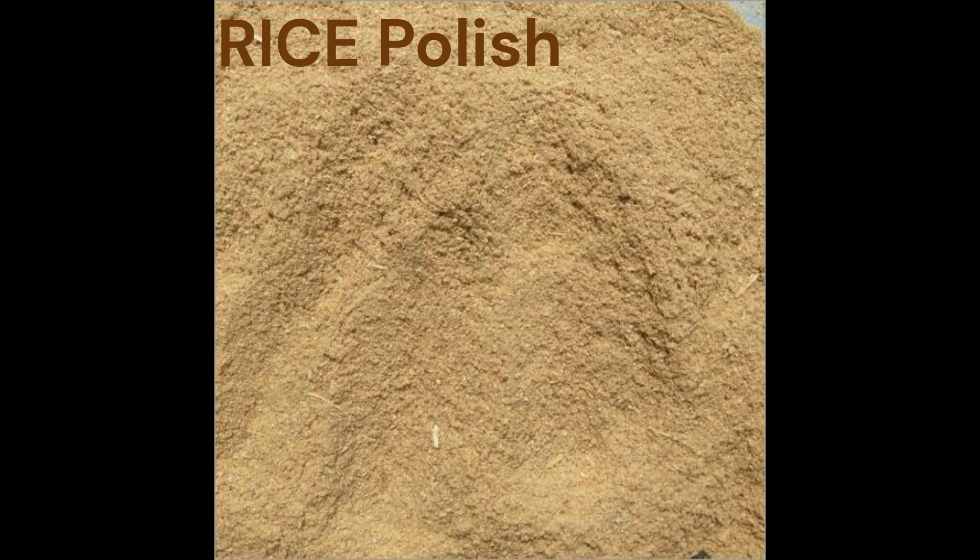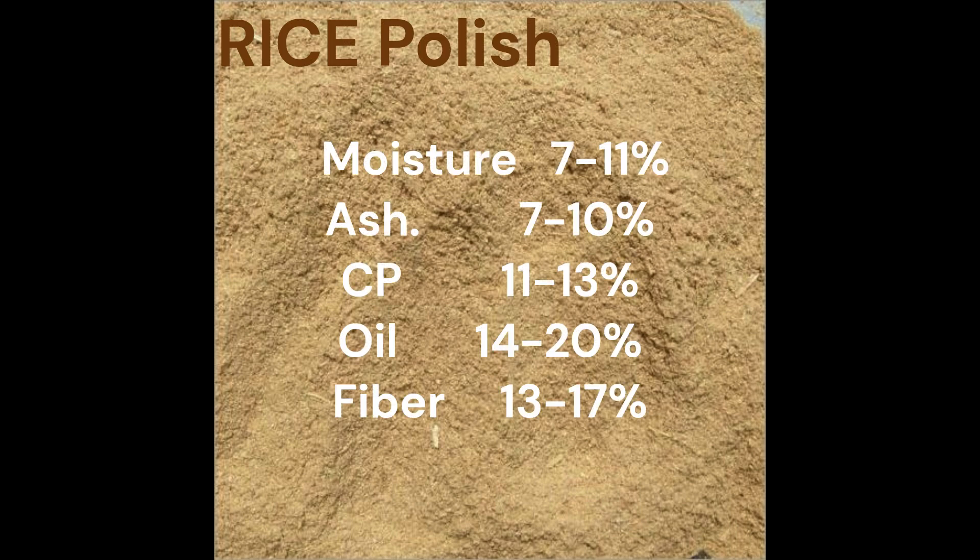Rice Polish is the next ingredient. It contains standard moisture 7-11%, ash 7-10%, crude protein 11-13%, oil 14-20%, and fiber 13-17%.